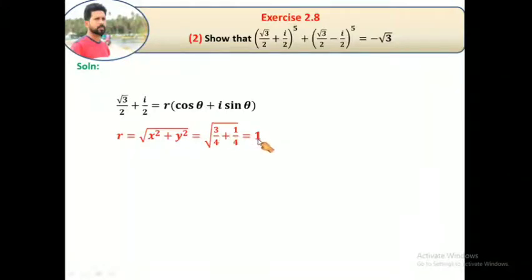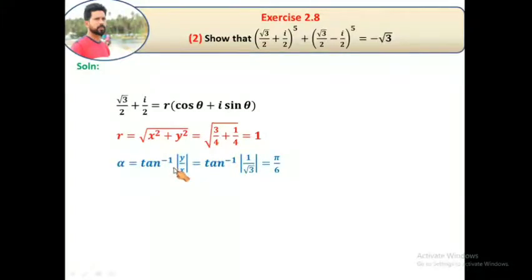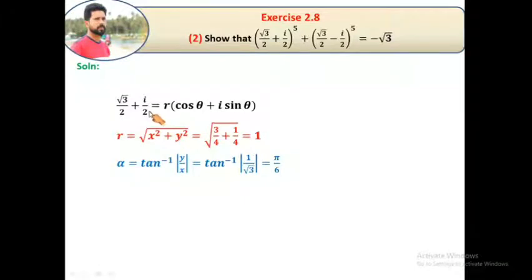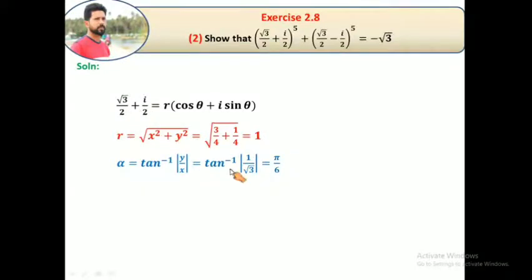Next, α equals tan inverse of imaginary part by real part, that is tan inverse of (1/2)/(√3/2). Denominator cancels, giving 1/√3. Tan inverse of 1/√3 is π/6. Now check: real part is positive, imaginary part is positive, so first quadrant. Therefore θ equals α, that is π/6. So now we have r value and θ value.